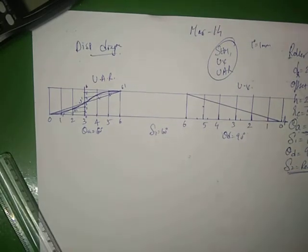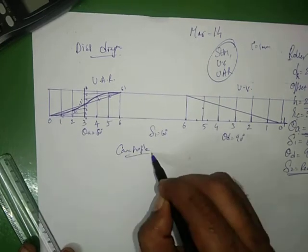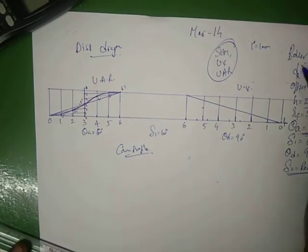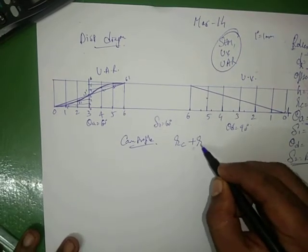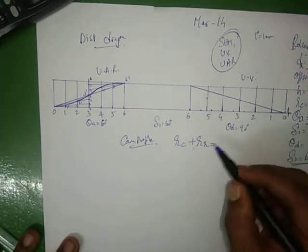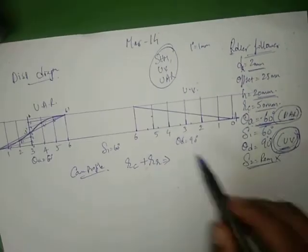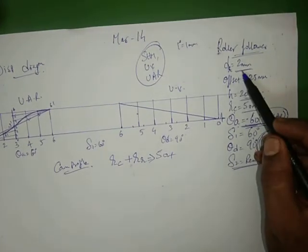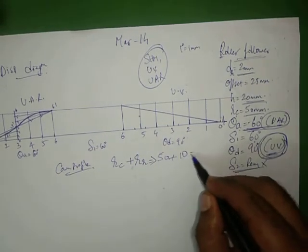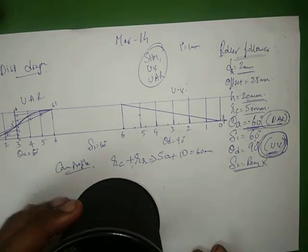Next is the cam profile. The cam has a follower. The cam radius is 50 mm, and the roller radius is 20 mm — so 10 mm added gives a base circle of 60 mm. Now let's draw the circle.